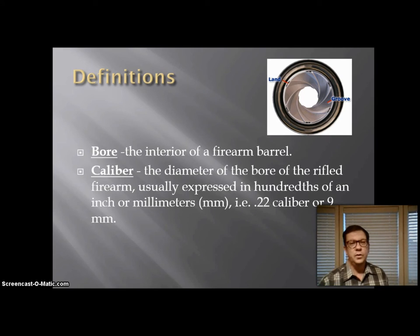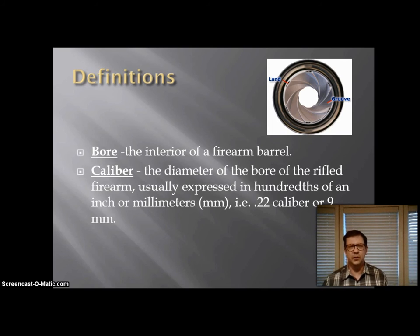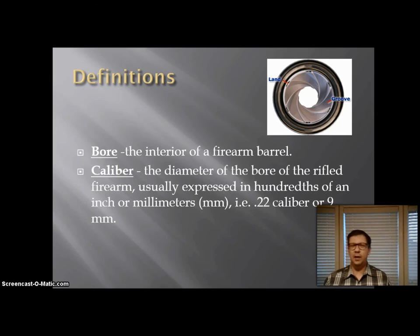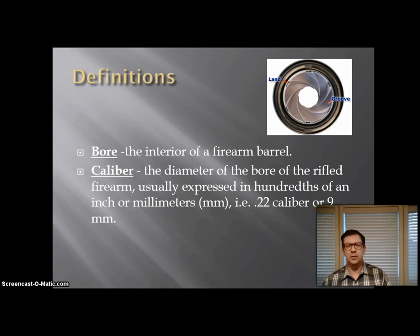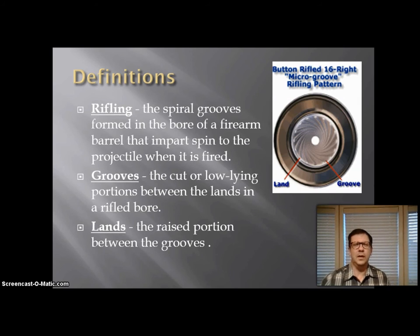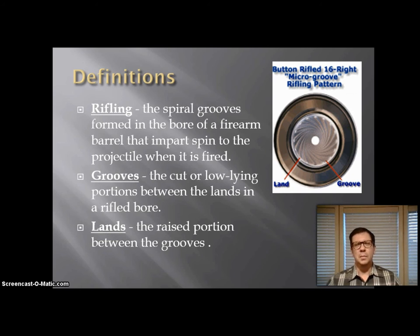Here are a couple of other definitions you need to know. The bore is the interior of a rifle barrel. Caliber is the measure of how far across the bore it is — the diameter — and we usually put it in terms of hundredths of an inch. So a .22 caliber rifle means it is .22 inches across. Some guns, especially those made outside the United States, are measured in millimeters — the 9mm is a common gun we see in America. Rifling refers to the spiral grooves on the inside of the bore. Grooves are the low-lying portions; lands are the raised portions. But the lands and grooves are reversed on a bullet, so the grooves are the raised portion and the lands are the low-lying portion on a bullet.